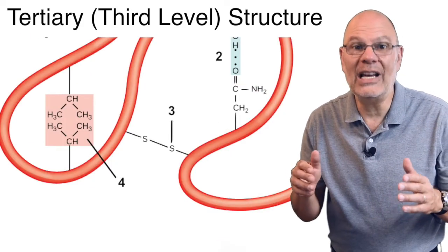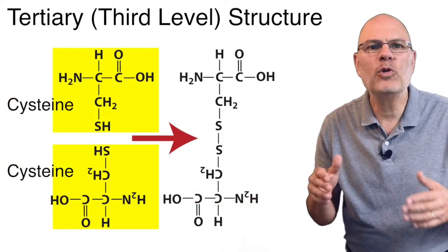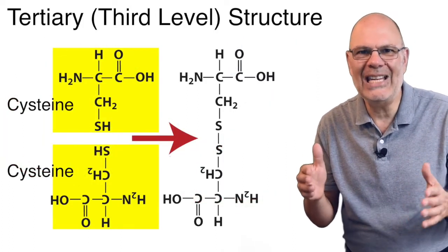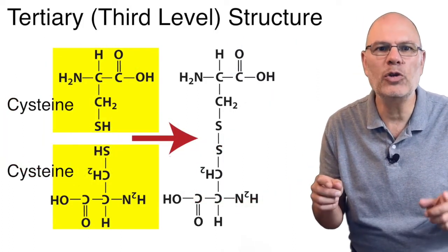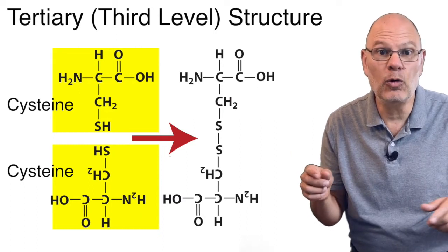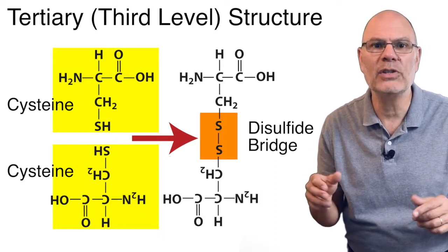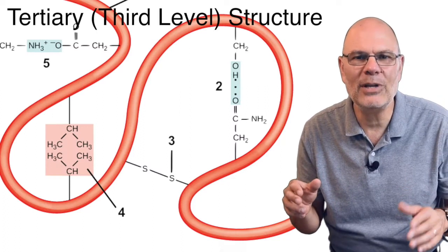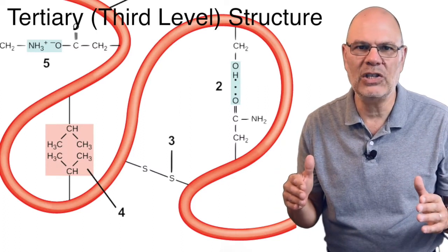we have a disulfide bridge. This forms whenever cysteines, which end in sulfhydryl groups, get close to one another. Their sulfhydryl groups form a covalent bond between the two sulfur atoms. This causes the polypeptide chain to loop back upon itself.